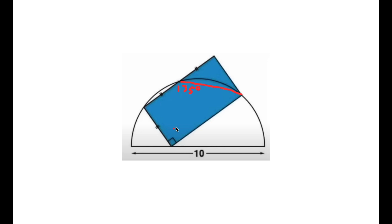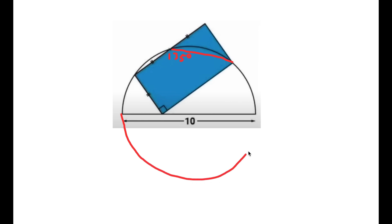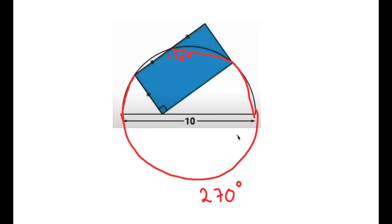From here I'm going to draw a full circle just to make solving this a little easier, because it's easier to deal with a full circle than a half circle. The length of this part without the 135 degrees is going to be 270 degrees because a full circle is 360. That means this part right here is 90 degrees because 270 plus 90 equals 360.